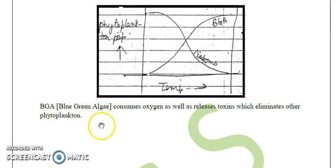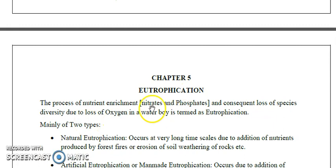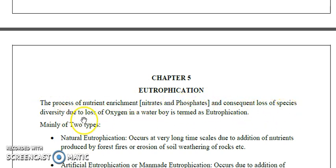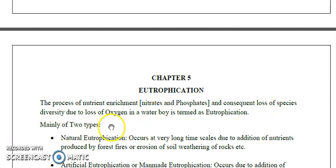Now we will discuss eutrophication in detail. 'Eu' means true and 'troph' means food or nutrition. Eutrophication can be defined as the process of nutrient enrichment — especially by nitrates and phosphates — and consequent loss of species diversity due to lack of oxygen in a water body.